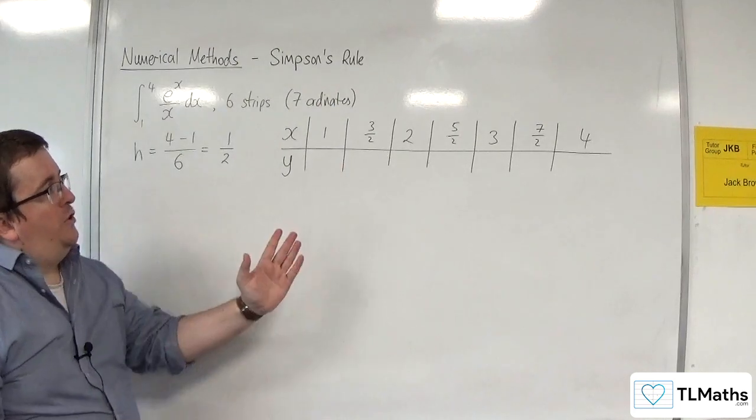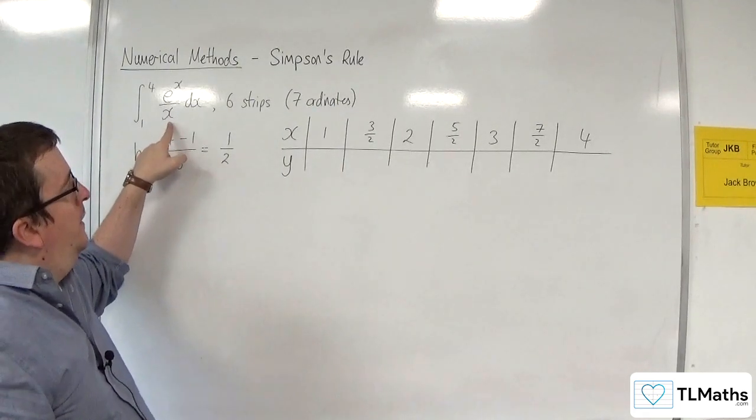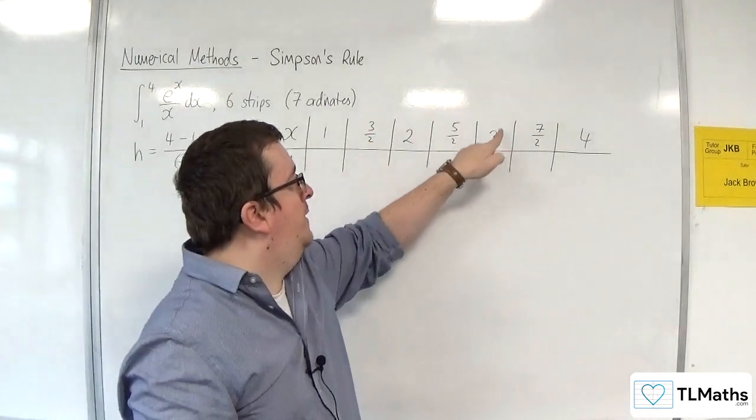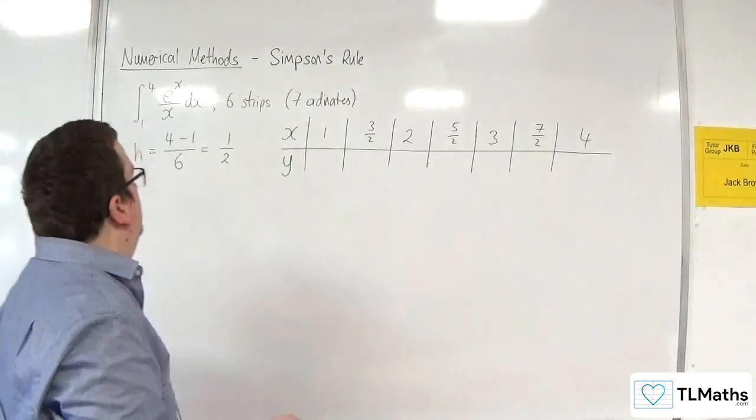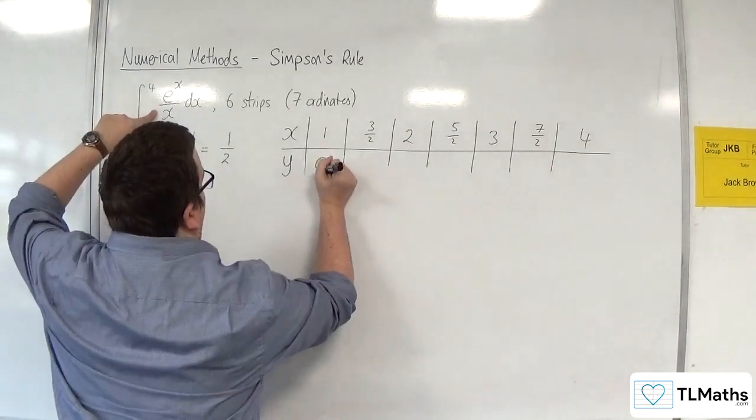So then I need to substitute these values into my function e to the x over x. So just double check that you've got 7 ordinates. 1, 2, 3, 4, 5, 6, 7. So substitute in 1, we're going to get e to the 1 over 1, which is just e.